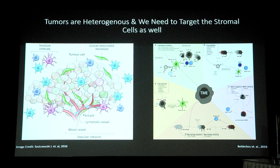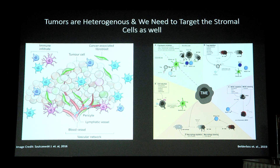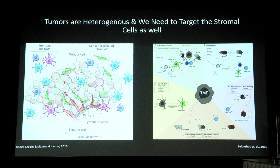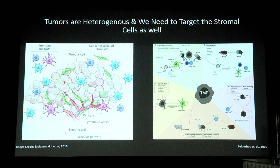As we all know, a tumor is not just a mass of transformed cells growing uncontrollably — it is a complex consortium of malignant and non-malignant cells working together. The non-malignant cells constitute part of the tumor microenvironment, and there is complex crosstalk between them. In order to get rid of tumors, we have to target tumor cells along with the tumor microenvironment.